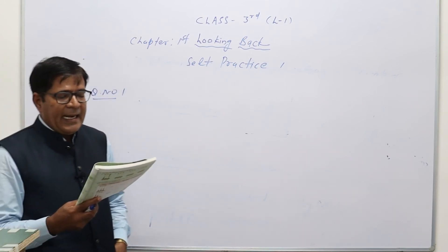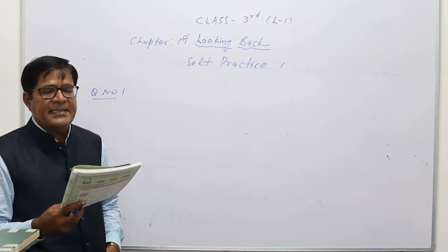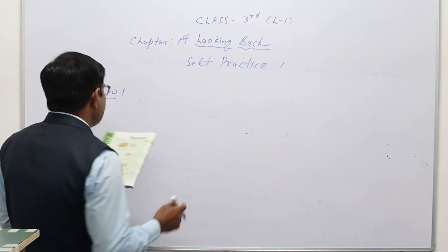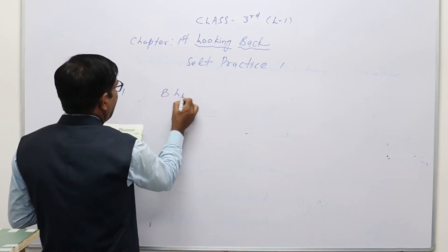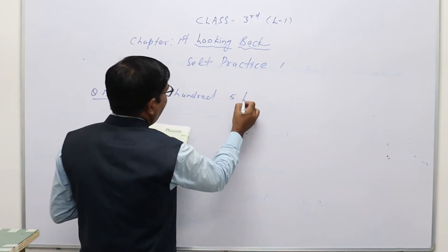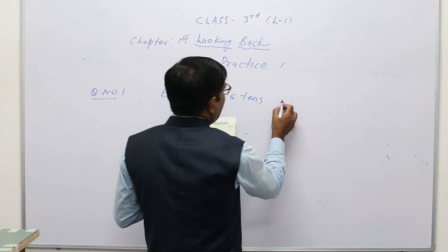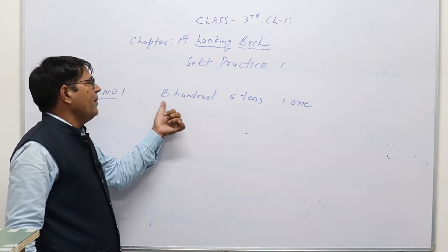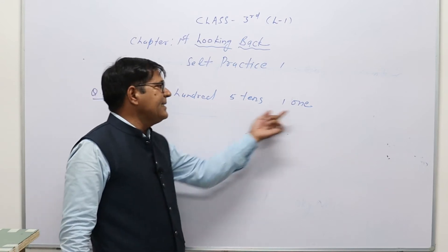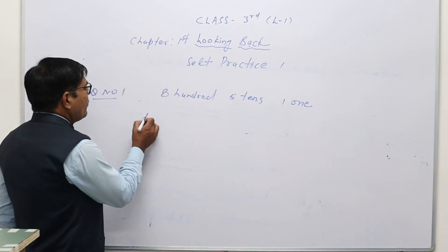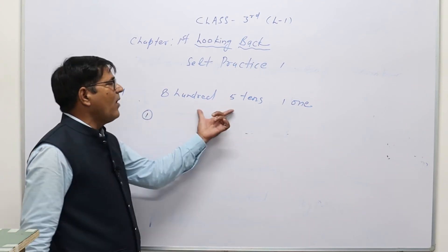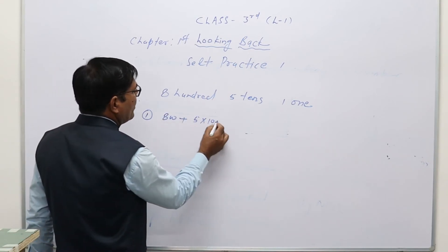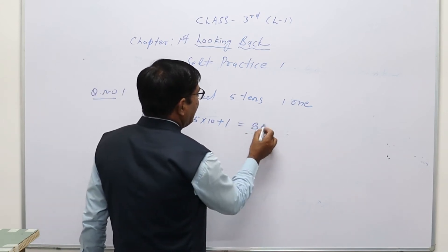Question number one: one slab is divided into 10 × 10, so one slab has 100 places. Eight such slabs are given — so that is 8 hundreds. Then 5 tens and 1 one. We have to write this in numeral form: 8 hundreds + 5 tens + 1 one = 800 + 50 + 1 = 851.